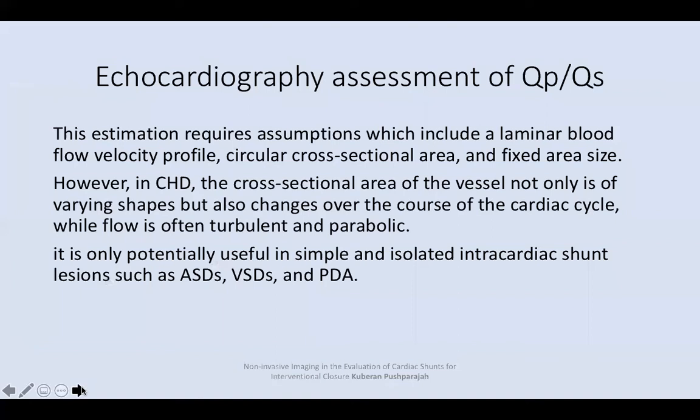The estimation requires assumptions which include laminar blood flow, velocity profile, circular cross-sectional area, and fixed area size. However, in congenital heart disease, the cross-sectional area of the vessel is not only of varying shapes, but also changes over the course of the cardiac cycle, while flow is often turbulent and parabolic. So it is only potentially useful in simple and isolated intracardiac shunt lesions such as ASD, VSD, and PDA.